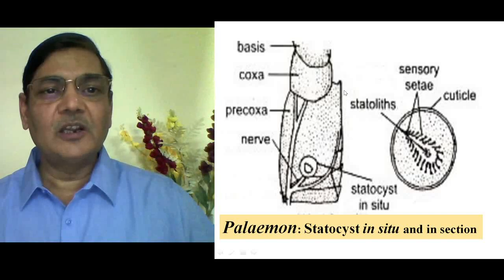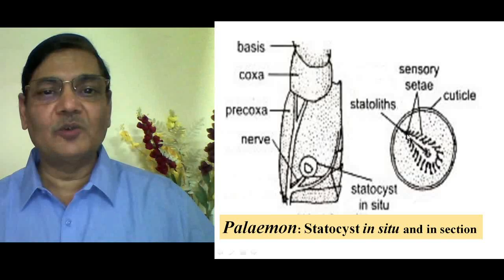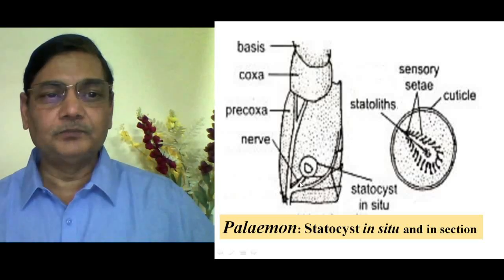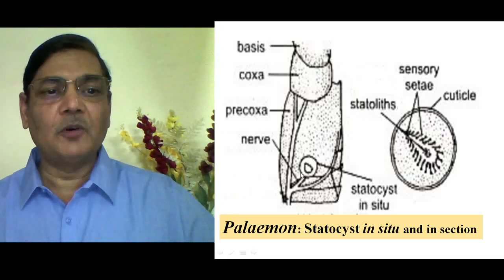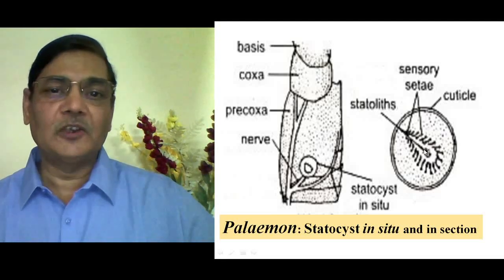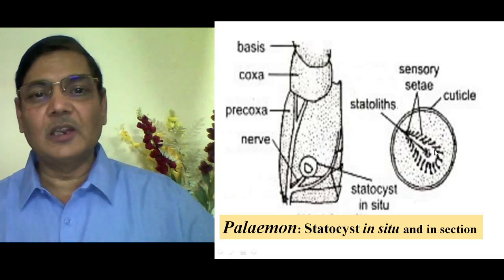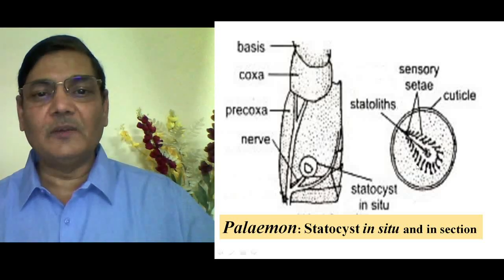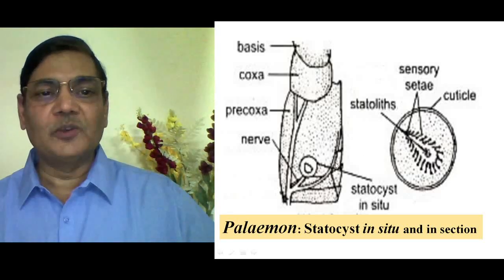In majority of colleges and universities, students are able to dissect out the Statocyst because Palaemon is easily available. By dissecting this structure, they can get an idea about its position. As described, the function of the Statocyst is that the Statolith will move to one side according to the change in position of the body, and consequently it will affect the sensory cells. This information will be conveyed to the nervous system of the animal.